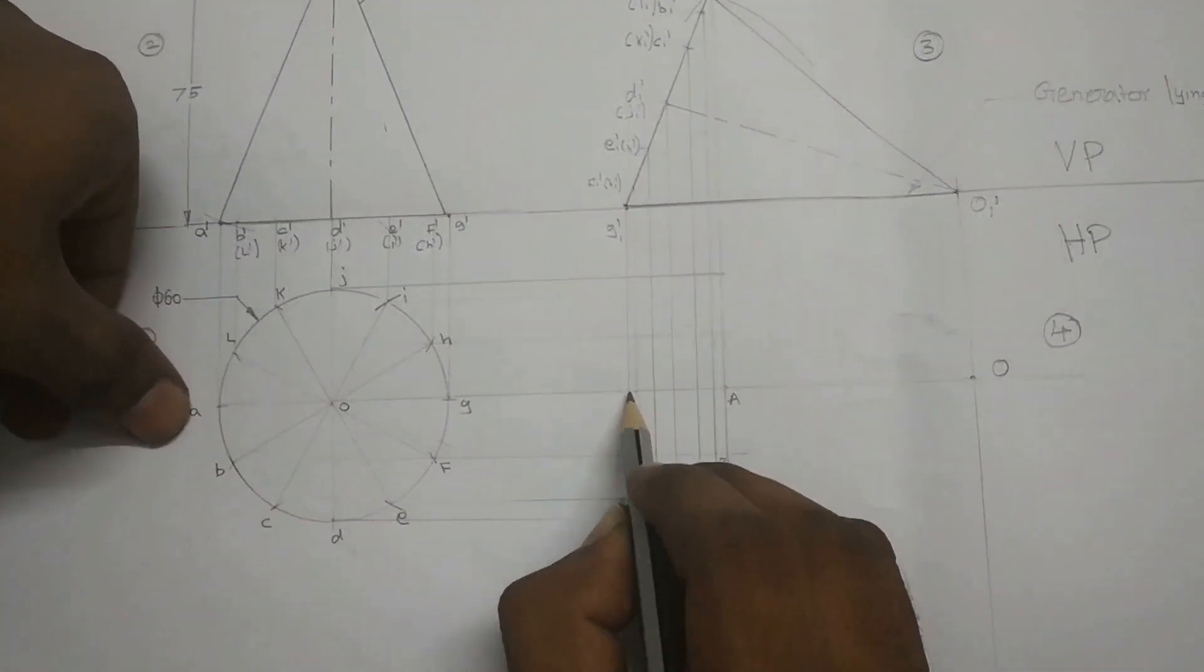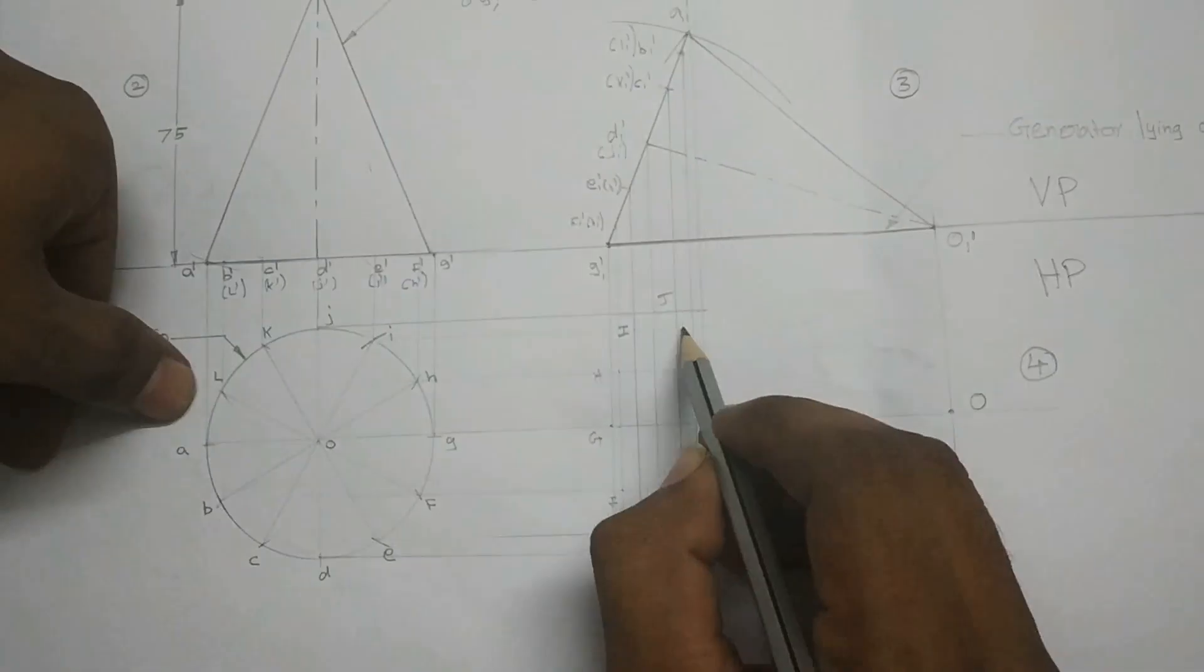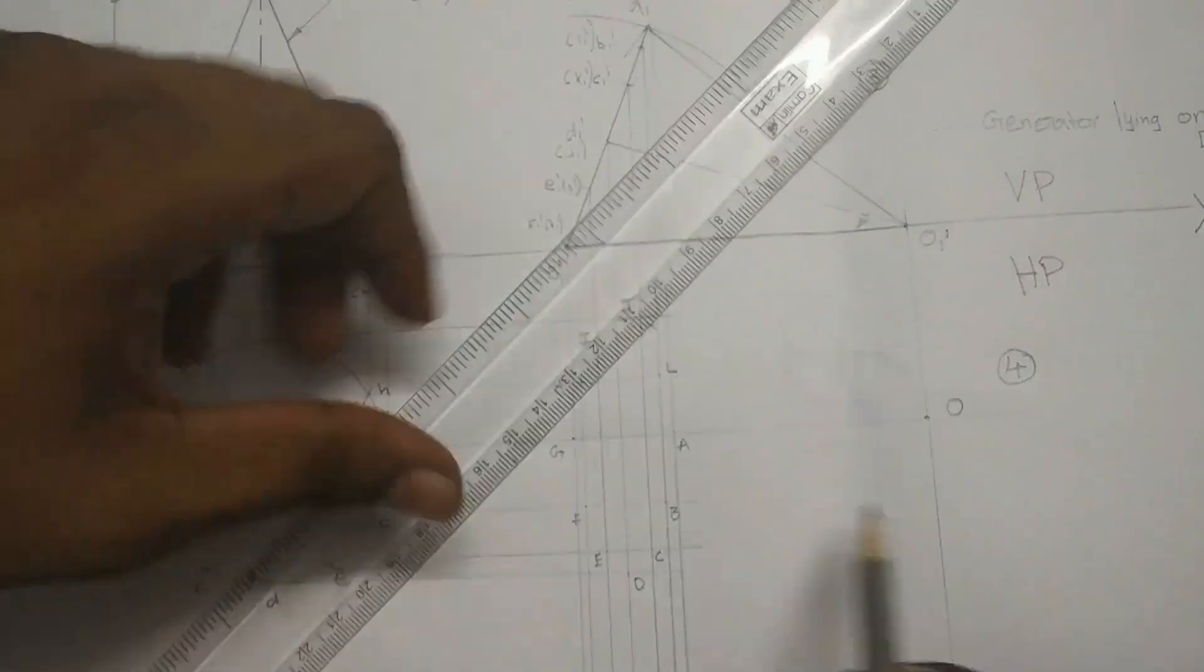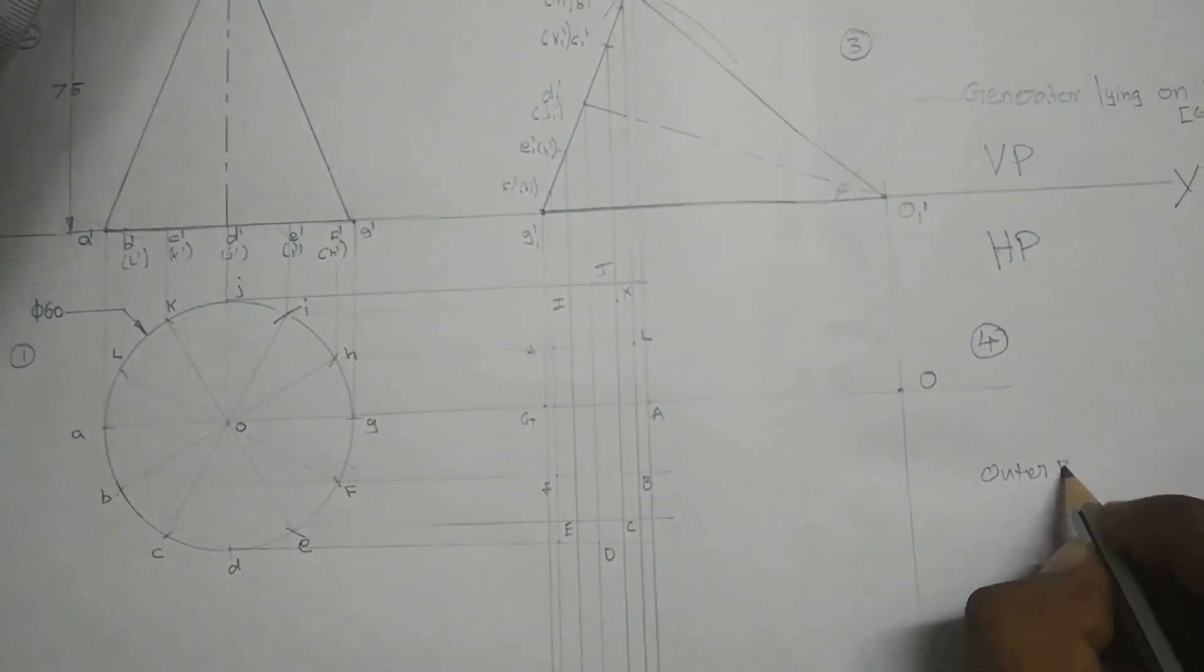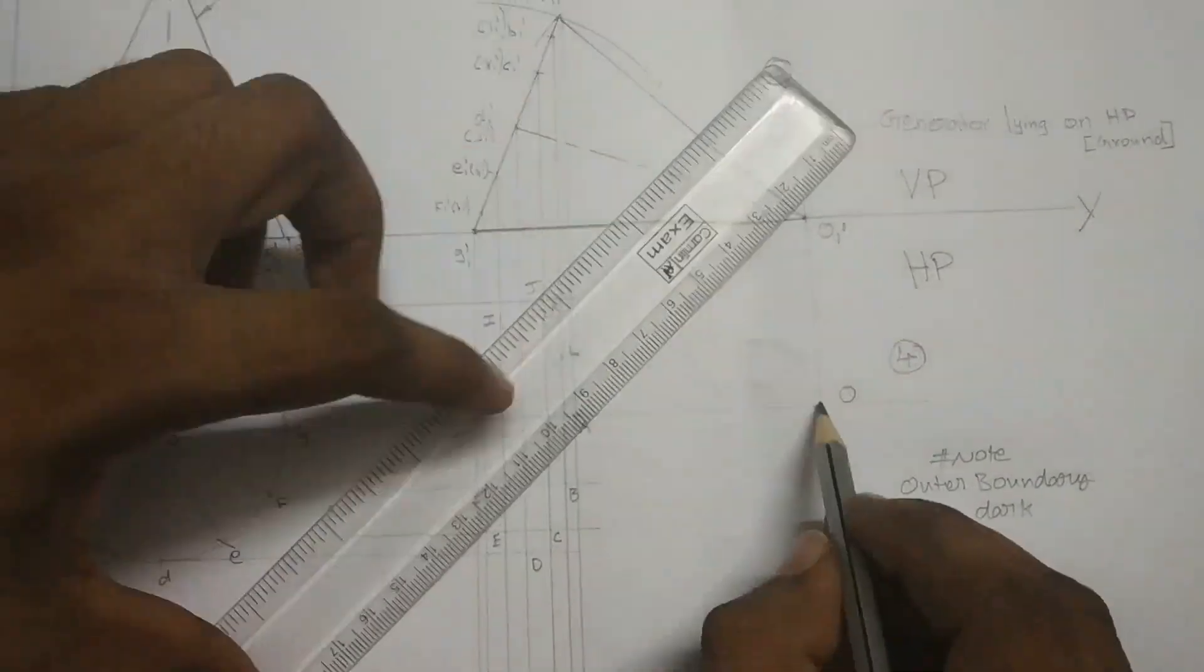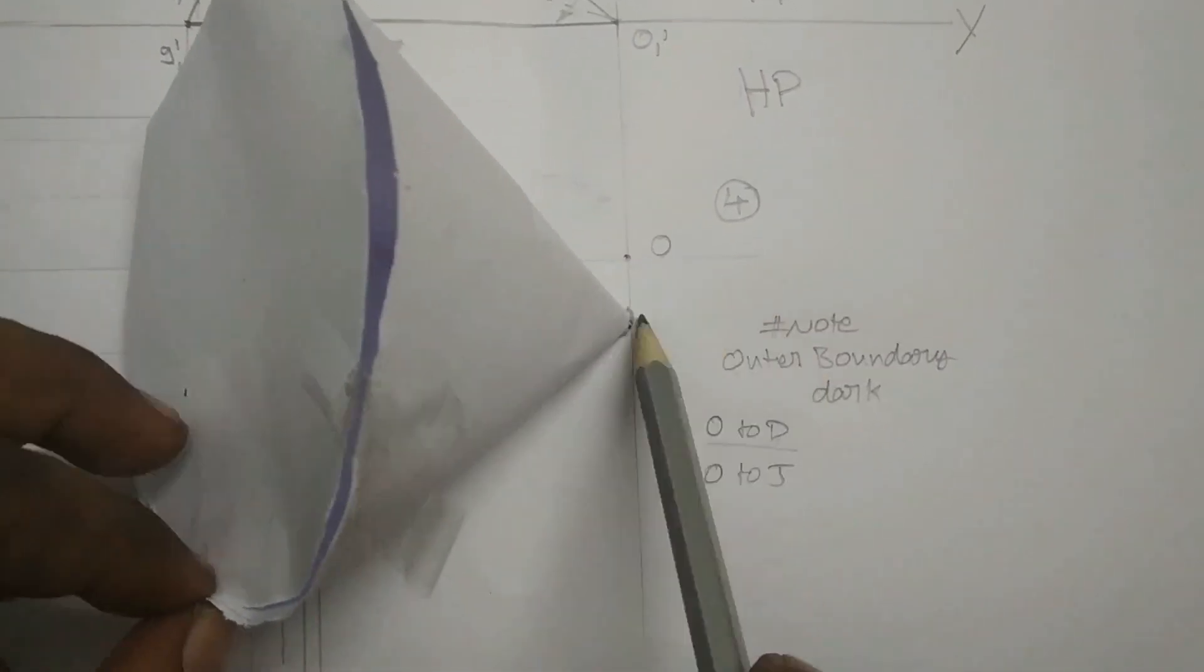Similarly we have to mark all the points A, B, C, D, E, F, G, H, I, J, K and L. After marking all the points now we have to darken our object.